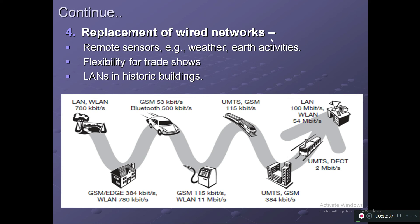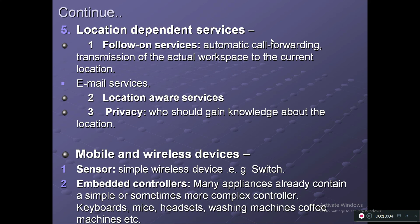Wireless also enables replacement of wired networks — for remote sensors, weather and earth activity monitoring, trade shows, and historic buildings where wiring would cause damage. You can see in the picture: buildings, homes, cars, trains — all systems that once used wired communication are steadily shifting to wireless technology. Location-dependent services such as follow-on services, automatic call forwarding, and transmission of the actual workplace to the current location, email services, and apps like Ola and Uber are all based on wireless communication.